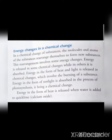In chemical changes which involve the burning of a substance, energy in the form of heat and light is released. Energy in the form of sunlight is absorbed in the process of photosynthesis — when photosynthesis occurs, it absorbs sunlight, being a chemical change. Energy in the form of heat is released when water is added to quicklime. During a chemical change, energy change is in the form of heat, light, or sound.